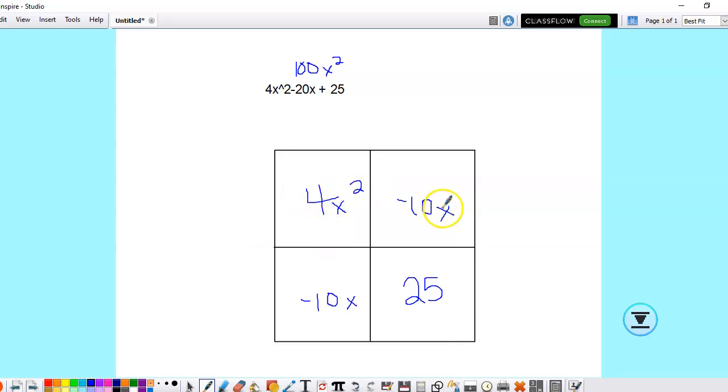And then all you have to do is just find the common factor, the greatest common factor for each row in each column. So if we were looking at this one here, the greatest common factor here would be 2x, and so then that would come out here.